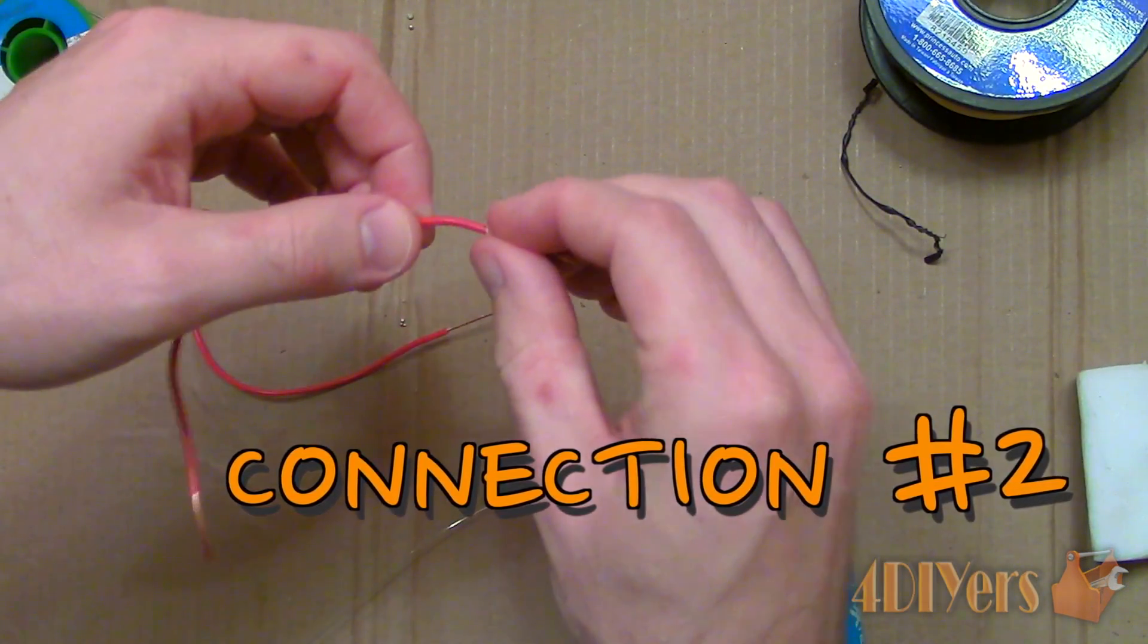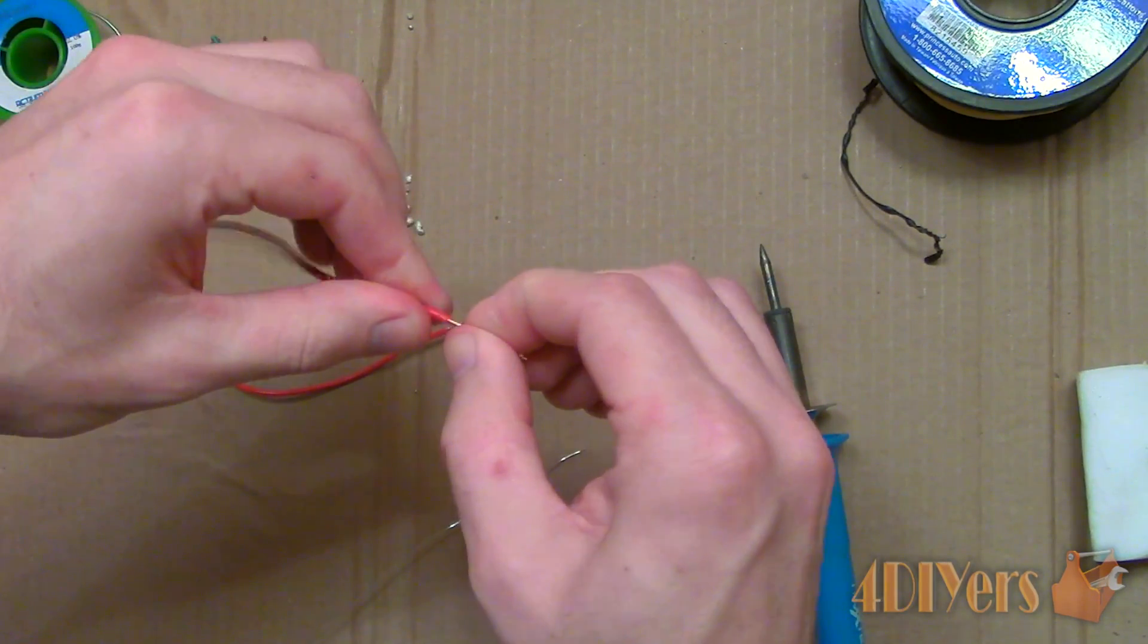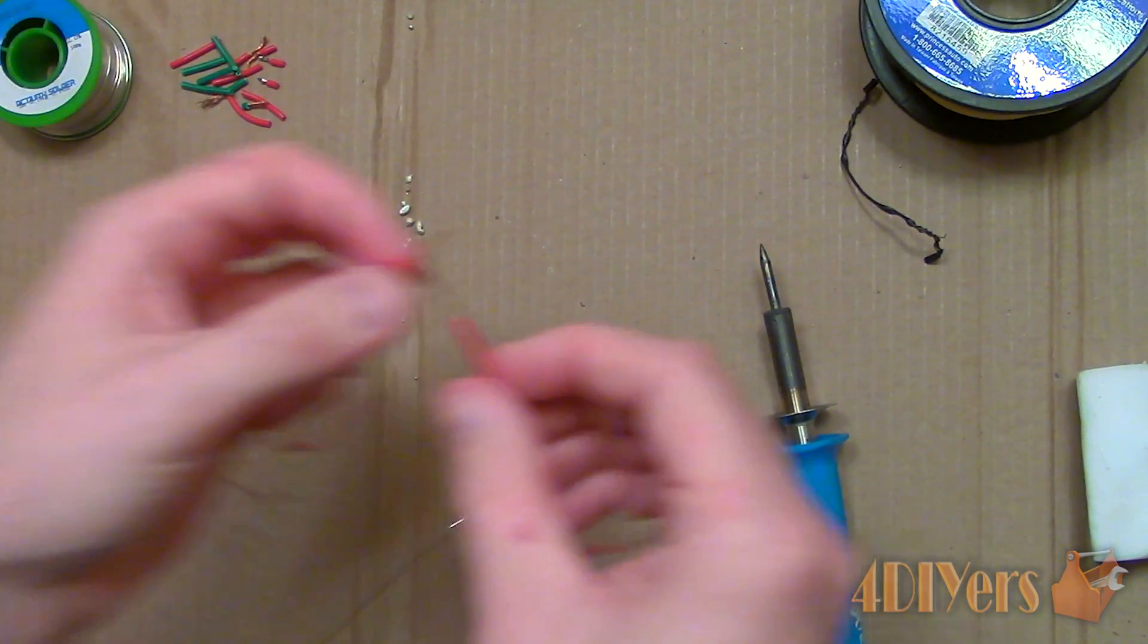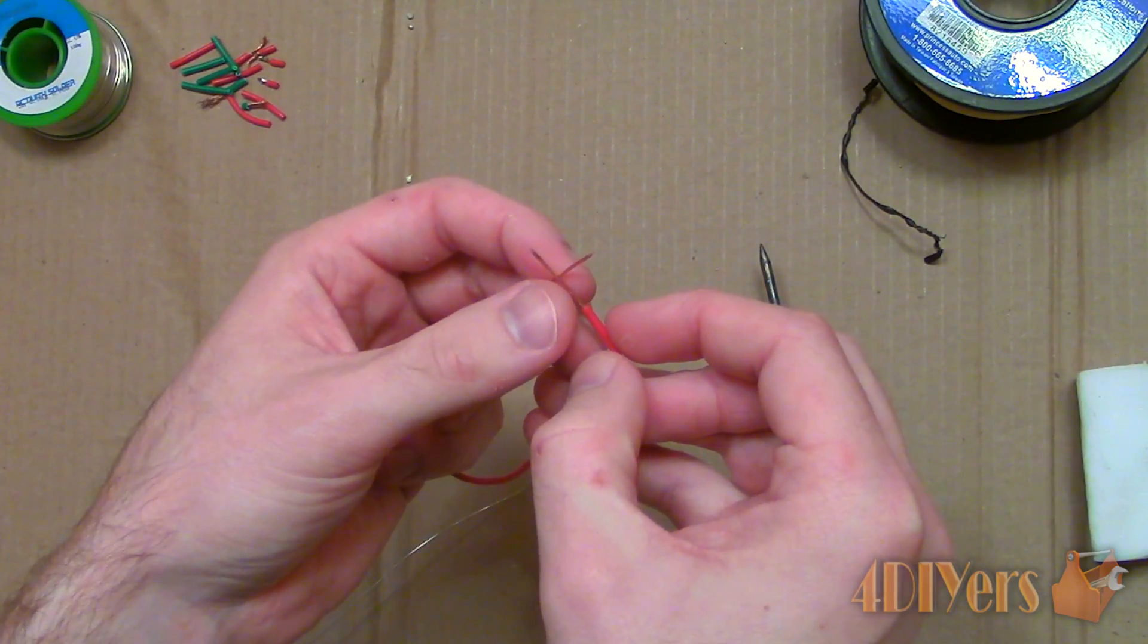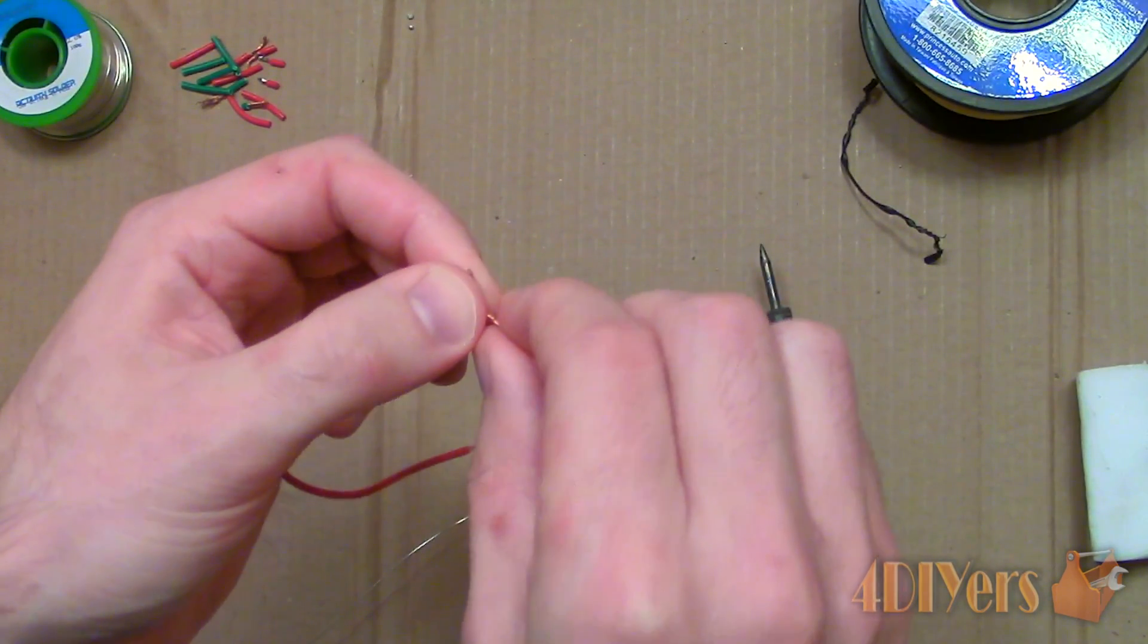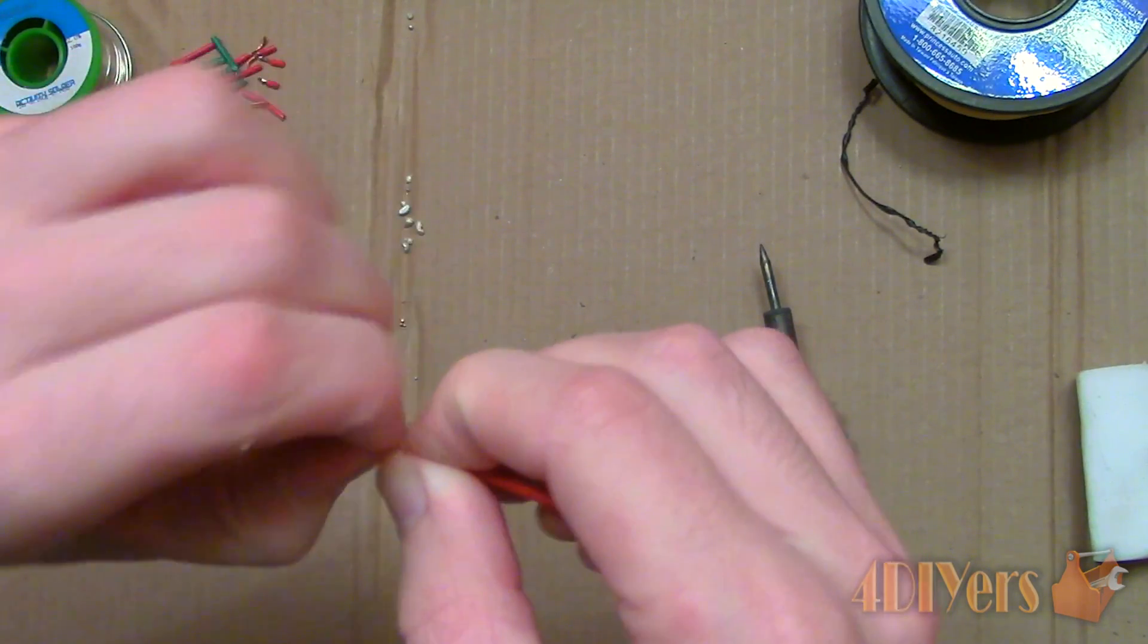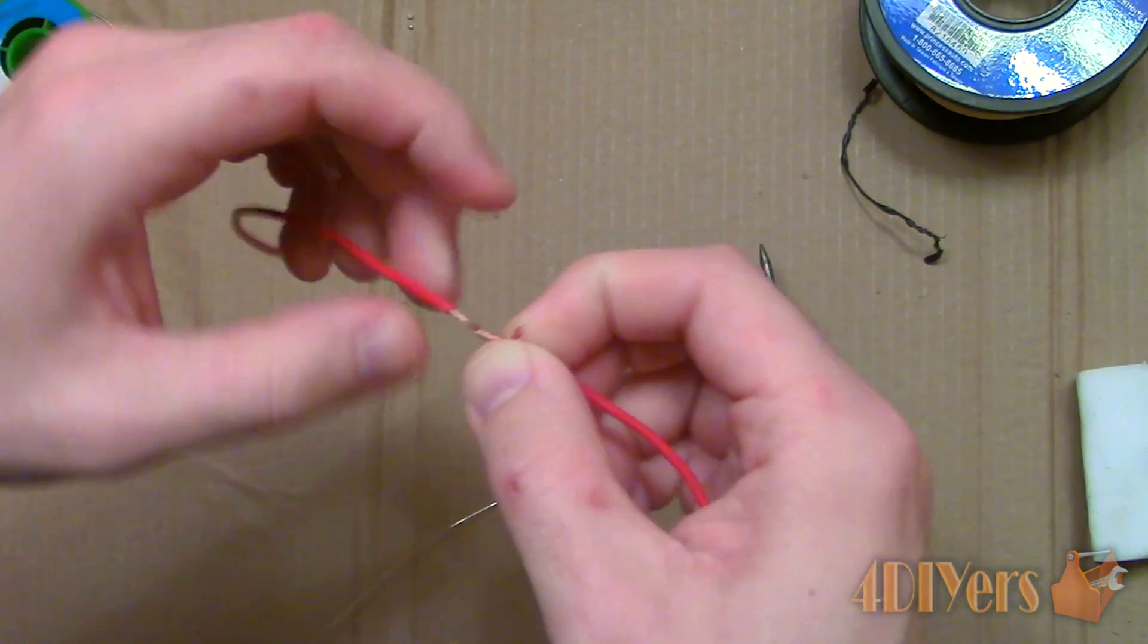Number two. Next is a Western Union splice, also known as a lineman splice. This can be used on both solid and stranded wire, but is more suitable for solid wire. Start by stripping the insulation back about 3 quarters of an inch on each wire.